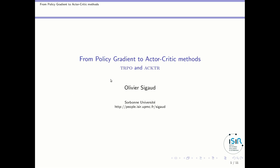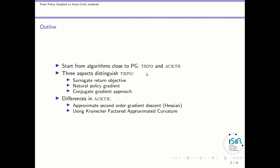In the previous lessons, we have studied basic policy gradient algorithms of the REINFORCE family, and then we have studied more advanced concepts. Now we are ready to start studying state-of-the-art reinforcement learning algorithms, and we will start with TRPO and ACTOR. There are three aspects that distinguish TRPO from REINFORCE-like methods: it uses a surrogate return objective, a natural policy gradient approach, and a conjugate gradient approach to compute the gradient.